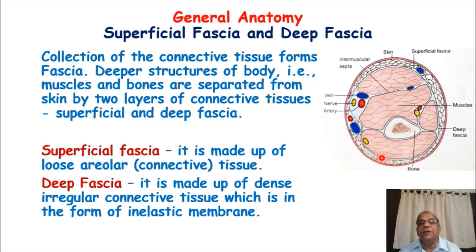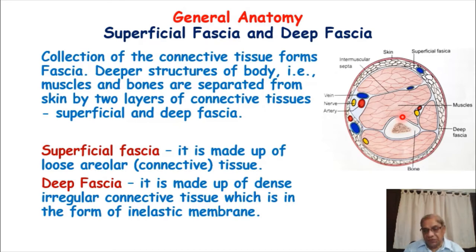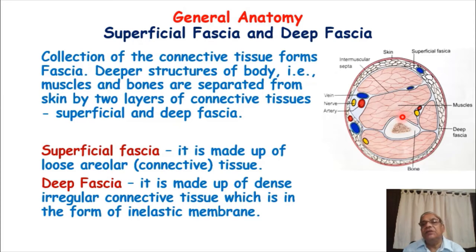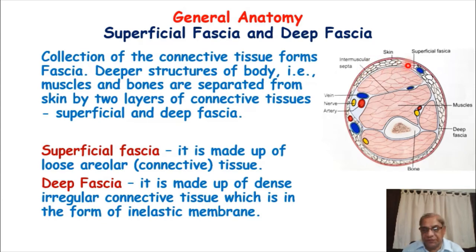The muscles and bones — the deeper structures of our body — are surrounded by the superficial and deep fascia, which are, as I said, connective tissue. The superficial fascia is made up of loose areolar tissue, which you will learn about in histology classes. In this loose connective tissue of the superficial fascia, a lot of fat cells are present.